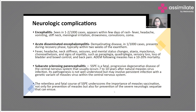Acute disseminated encephalomyelitis is a demyelinating disease occurring in about 1 in 1000 cases. It typically happens during the recovery phase, within two weeks after the rash is gone. The child can suddenly develop fever, headache, stiffness, seizures, ataxia, myoclonus, and choreoathetosis. Signs of myelitis such as paraplegia, quadriplegia, sensory loss, and loss of bladder control can also occur. This is a serious complication with 10 to 20 percent associated mortality.